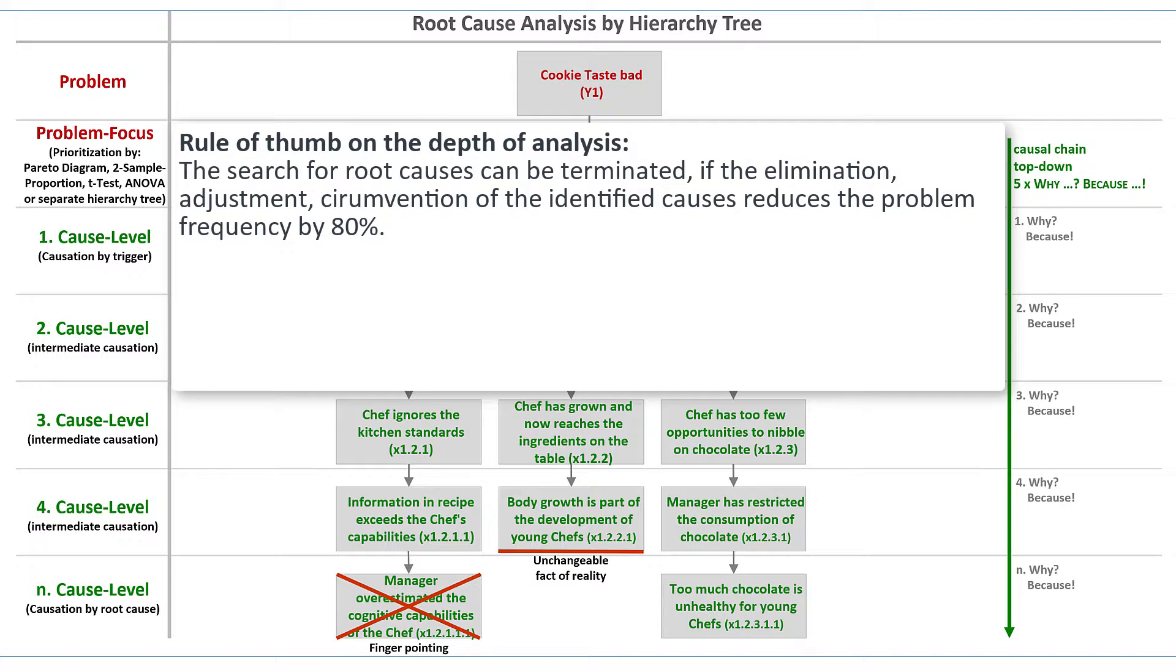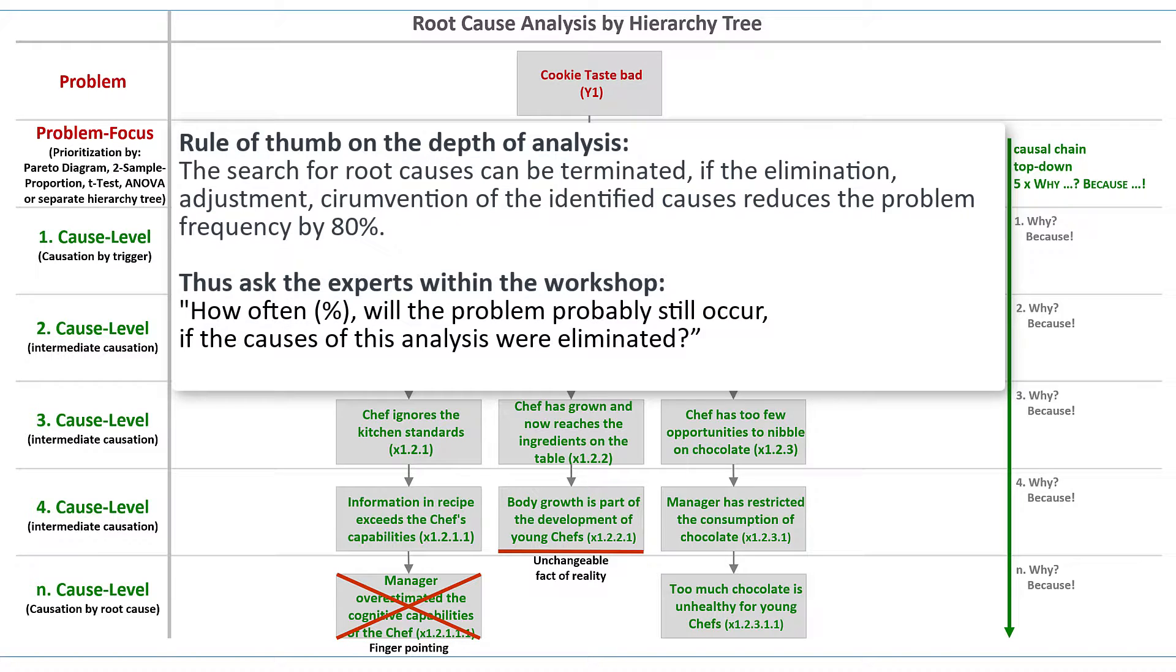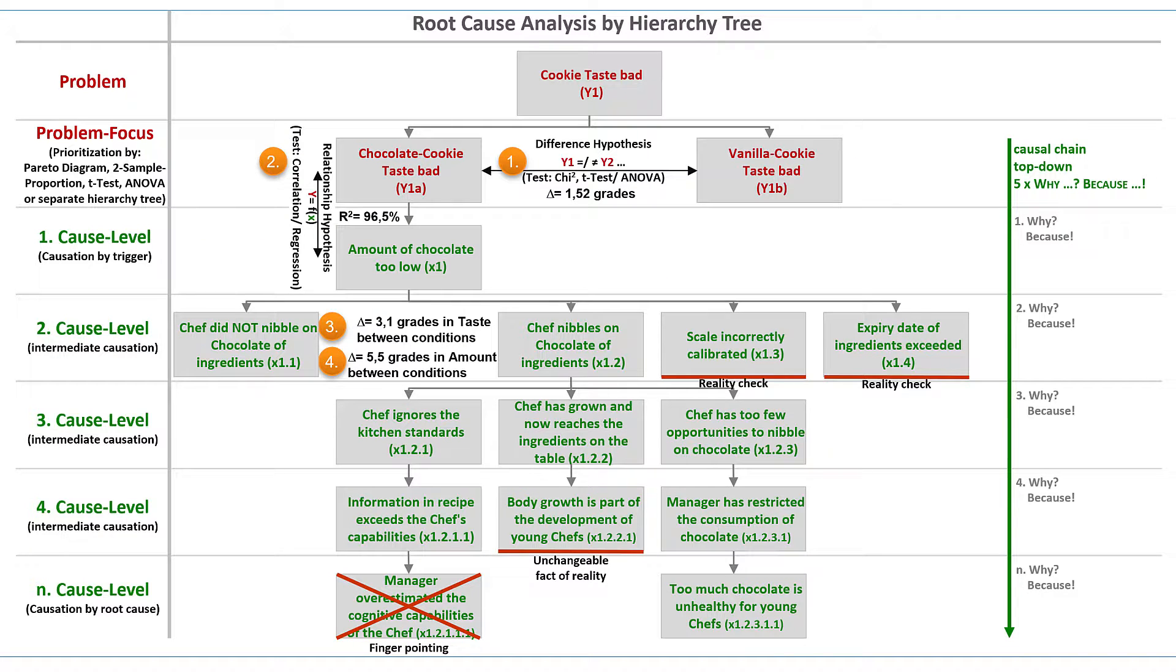There is a rule of thumb that the search for root causes can be terminated if the elimination of the identified causes would reduce the problem frequency by more than 80%. Therefore, I ask the experts how often, in percent, will the problem probably still occur if the causes of this analysis were eliminated. The experts can't think of any further relevant causes. And also in my view, we have sufficiently resolved the problem into its root causes, and I finish the analysis here.